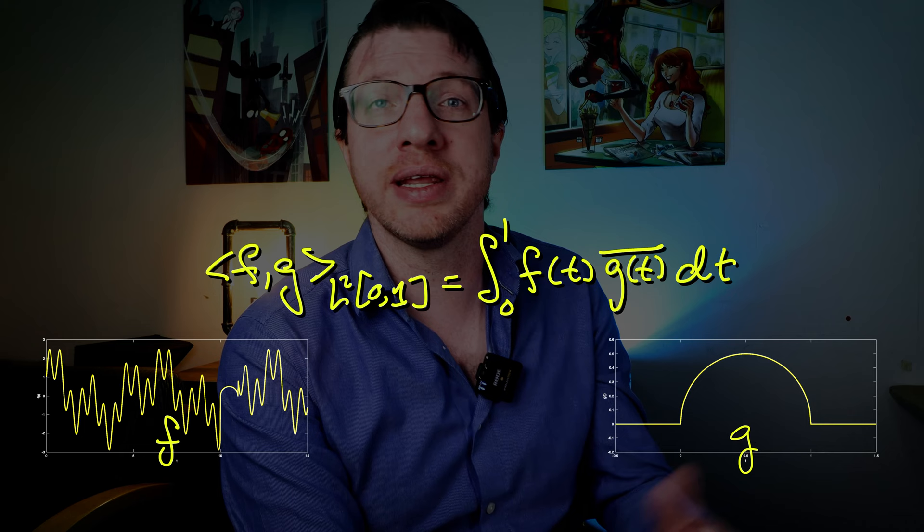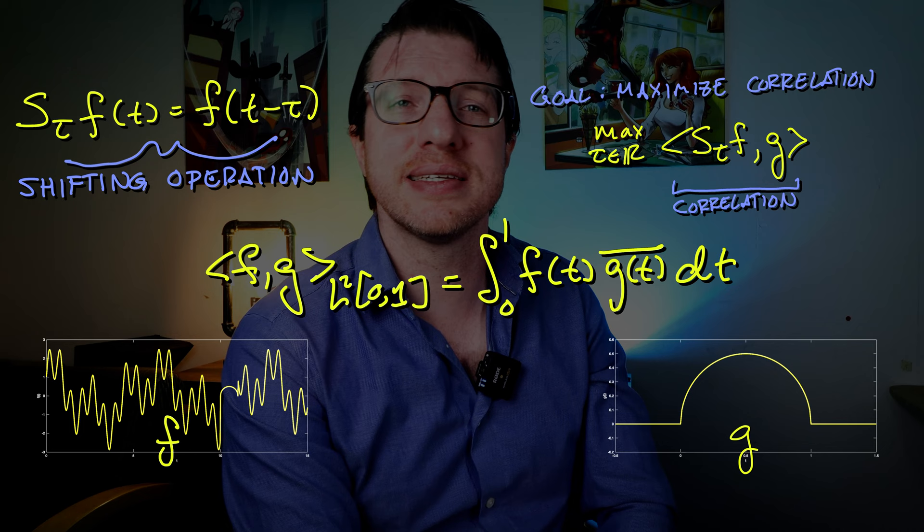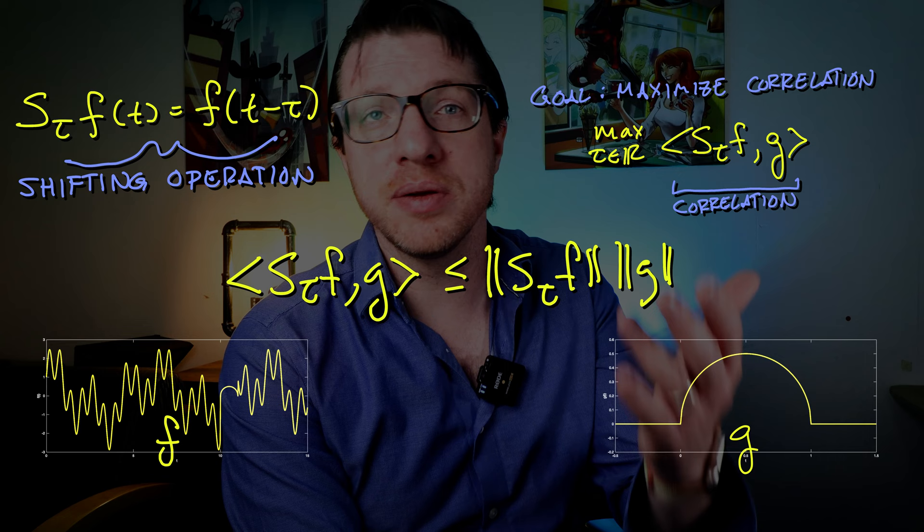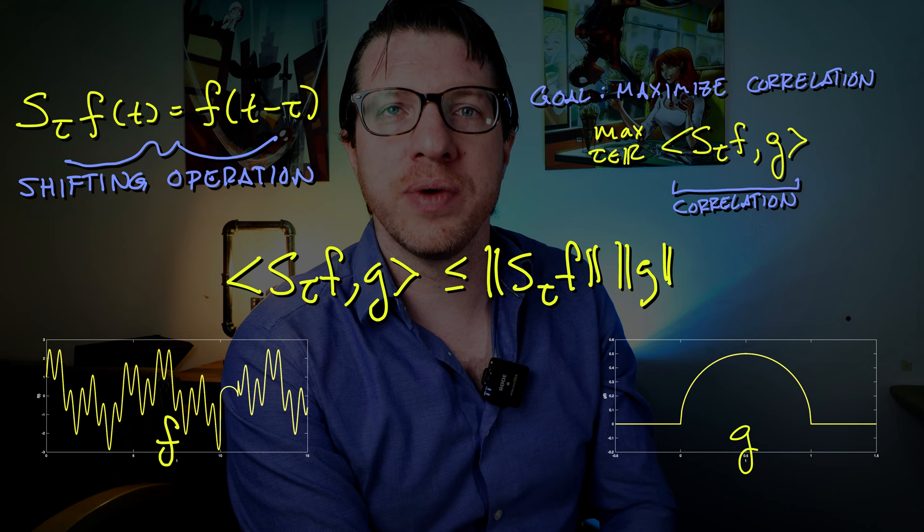So looking for correlation would be looking for something that maximizes z_τ acting on f, inner product with g, which we know is bounded by the norm of z_τ applied to f times the norm of g by Cauchy-Schwarz inequality. If there is an exact match of f within g, then that inner product would be equal to exactly that product of norms.